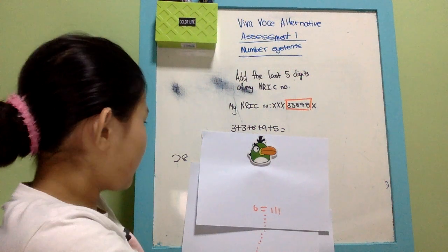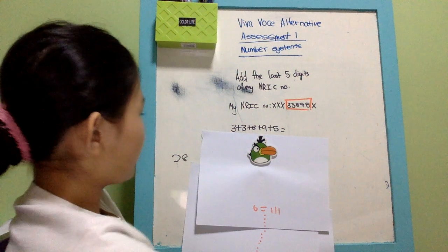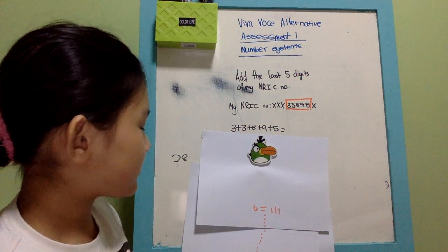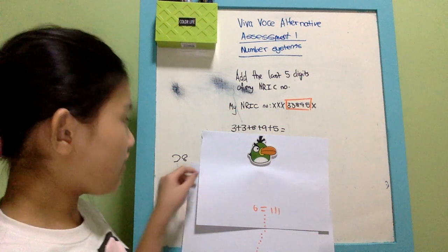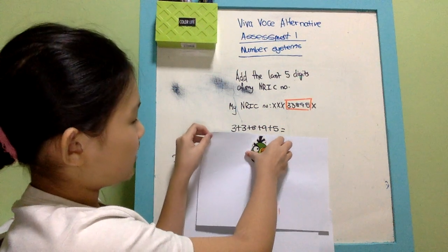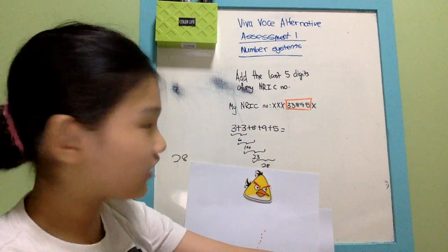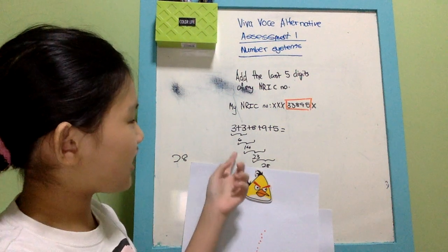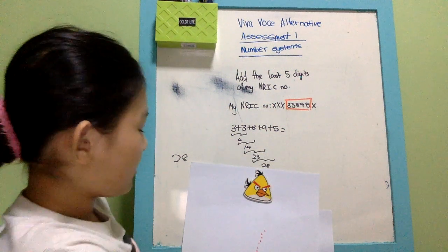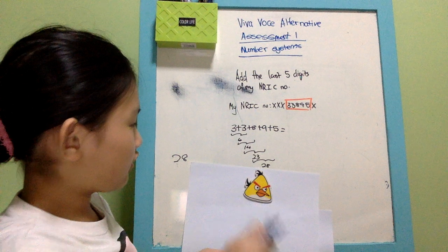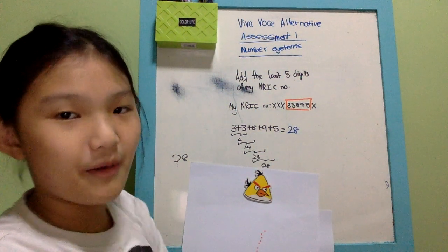I add those digits together: 3 plus 3 plus 8 plus 9 plus 5. My mental arithmetic isn't very good, so I've done it step by step using order of operations. After that, the answer is 28. Now I need to convert 28 to a binary number.